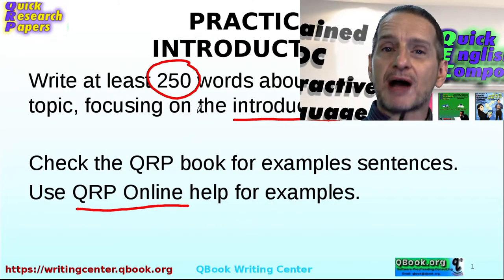Also remember, when you're writing, you can always use the QRP e-book, which has many examples, and QRP online does have that yellow box right next to where you're writing. You can click there and get example sentences, and you can use those to improve your writing.